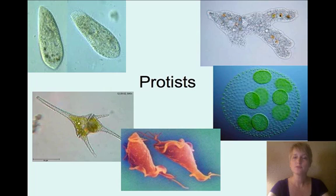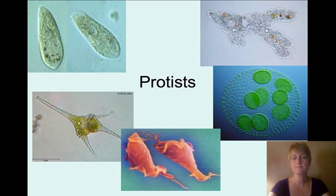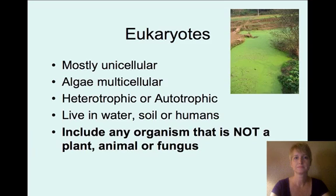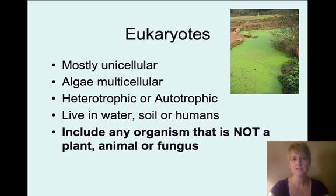Another kind of microbe we're going to talk about are protists. Protists are oftentimes one-celled organisms, but they can be multicellular — some algae are protists and they are multicellular. These are eukaryote cells, mostly unicellular but some are multicellular. They can be heterotrophic, which means they absorb other organisms, or they can be autotrophic, which means they use photosynthesis.